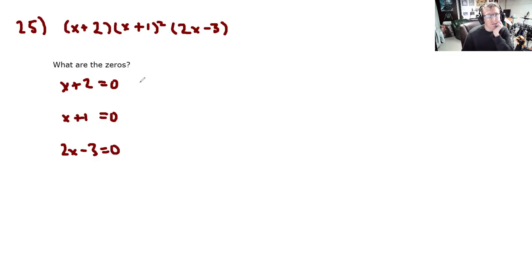So, the first two are obvious. Negative 2, negative 1. The last one, not as obvious, but it's still not too bad. We get 3 over 2. Y'all can check my math. I think that those are the zeros.